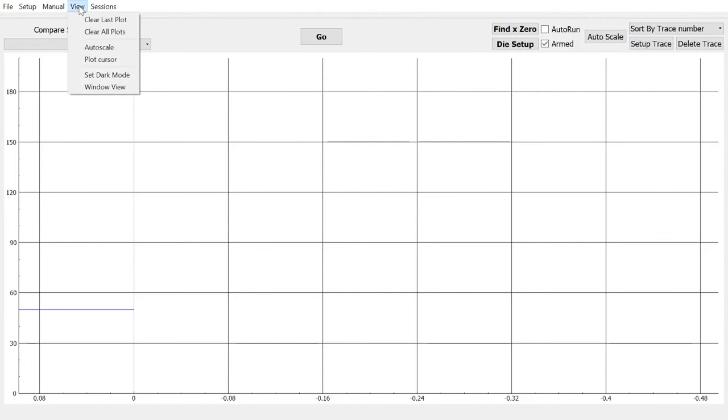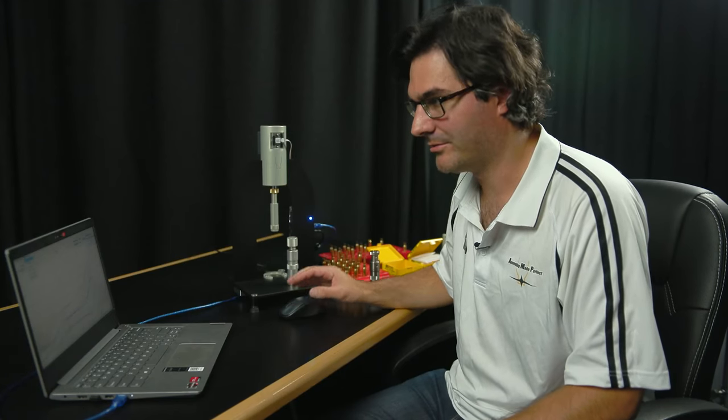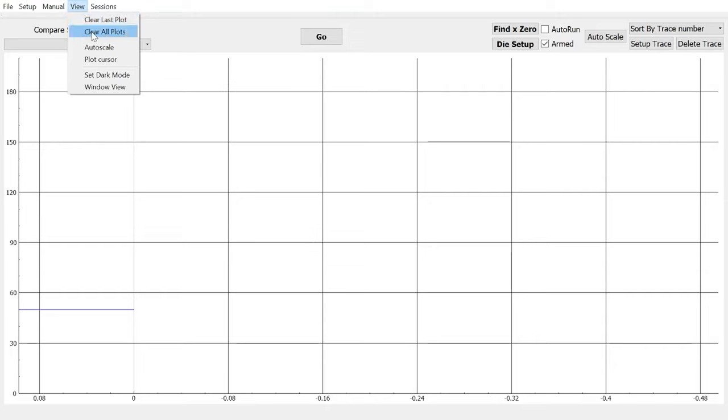With the view, you've got clear last plot. That will delete the previous plot, the one you just made, or trace. Clear all plots will remove all the traces from the chart area.